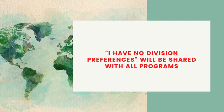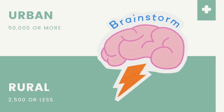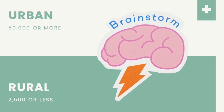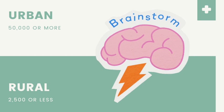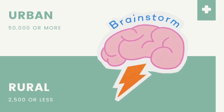Aside from stating preferences for a US division, you can also state preferences for urban or rural programs. You can choose a rural area, which is sparsely populated with a population of 2,500 or less, or an urban population of around 50,000 or more people. Again, you have the option of stating that you do not have a preference, but if you do have a preference, you have up to 300 characters to explain why.